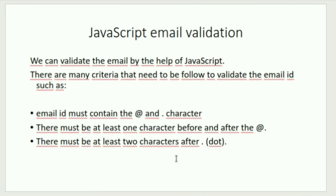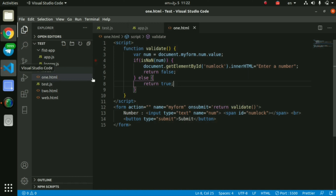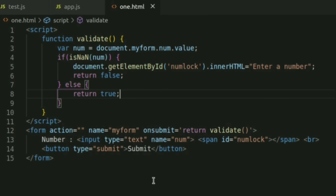For email validation, we check for the @ symbol and also for the dot character. If the email has any of these characters in the right position, the email can be validated. We will now open Visual Studio Code for this second example.